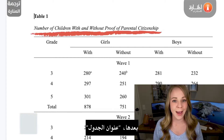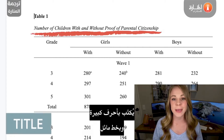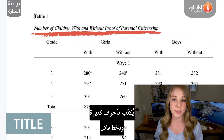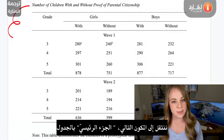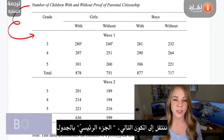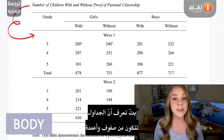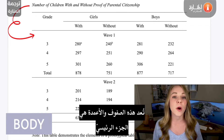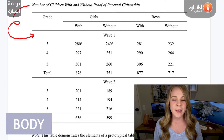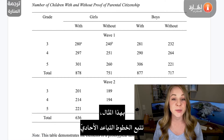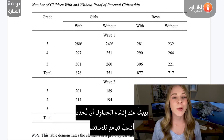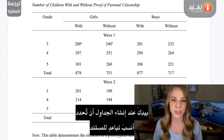Next, you have the table title. This should be typed out using capital case and italic fonts — capital case meaning that all major words are capitalized. Moving on to the body portion of the table: tables are made up of rows and columns, and those rows and columns are what are considered the body portion. They can be either single, 1.5, or double spaced.